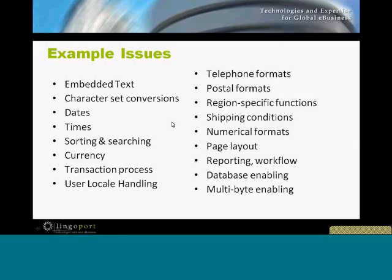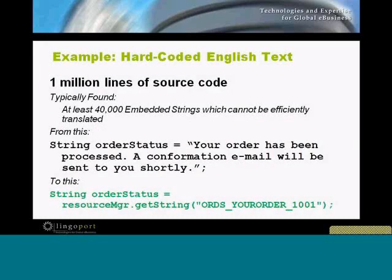Here are some high-level bullets. If we look at a real piece of code — let's say a million lines of code — we might find around 40,000 embedded strings that would be part of the interface. For example, a string presented as: 'Your order has been processed, a confirmation email will be sent to you shortly.' The problem with strings embedded in your code is that a translator can't get to them.